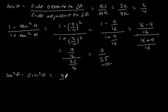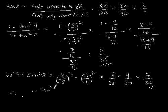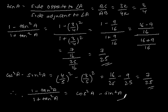Now let's find cos²A - sin²A. Cos A = 4/5, so (4/5)² = 16/25. Sin A = 3/5, so (3/5)² = 9/25. Therefore cos²A - sin²A = 16/25 - 9/25 = 7/25. Since both sides equal 7/25, we can say (1 - tan²A) / (1 + tan²A) = cos²A - sin²A. Hence proved.